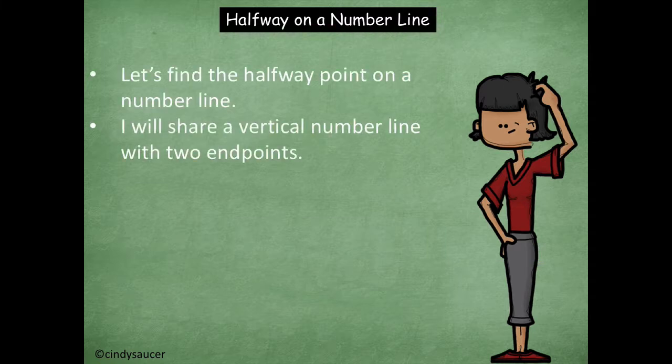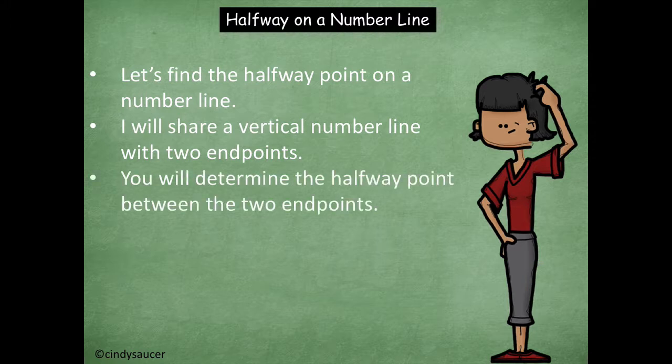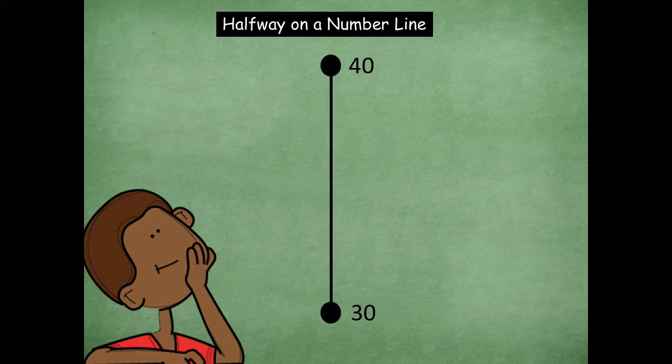Okay, but let's review how to do it. So we're going to find the halfway point on the number line. I'm going to share the vertical number line with the two endpoints, and then you're going to determine the halfway point between the two endpoints. Okay, so here's my first one, 30 and 40. So if I draw my points in between, my halfway point is 35. Remember, think about it as like 0 and 10, and right in between there is 5.